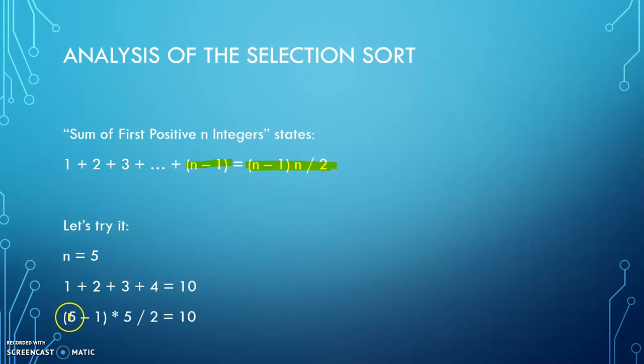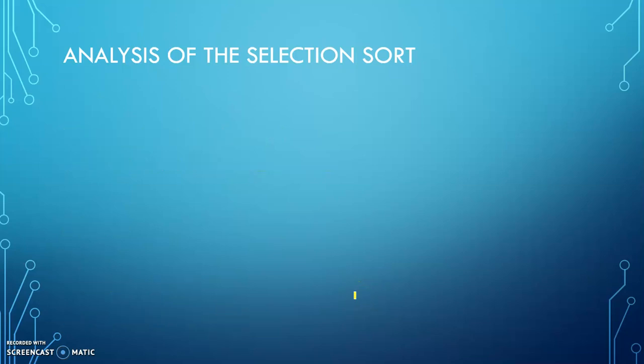So we have n is 5 again. n minus 1 is 4 times n, which is 5, that's 20, divided by 2 equals 10. So we see that the law is solid and it holds for those numbers. So getting back to our selection sort here.